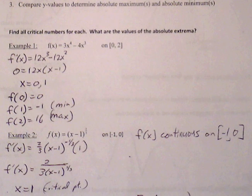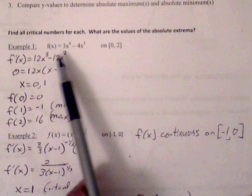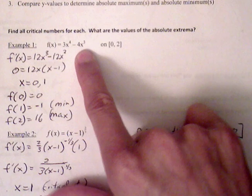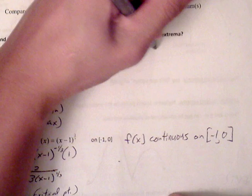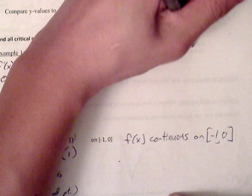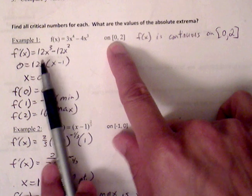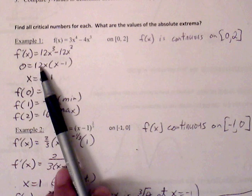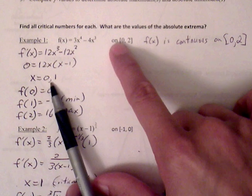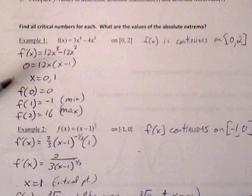Example 1: Find all the critical numbers, then determine what values give the absolute extrema. Our function is 3x⁴ minus 4x³ on the given closed interval. Since this is a polynomial function, it is continuous on the closed interval. We find the derivative — 12x³ minus 12x² using the power rule — then factor out 12x² to get x equals 0 and x equals 1. Since 0 is already an endpoint, we only need to consider 1. So our candidates are 0, 1, and 2.